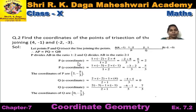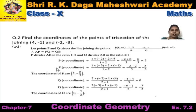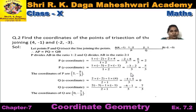X-coordinate of P = (1×(-2) + 2×4) / (1 + 2) = (-2 + 8) / 3 = 6/3 = 2. Y-coordinate of P = (1×(-3) + 2×(-1)) / (1 + 2) = (-3 - 2) / 3 = -5/3. Hence, the coordinates of point P are (2, -5/3).